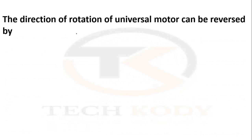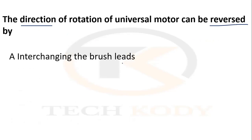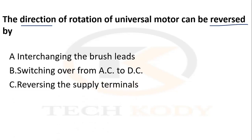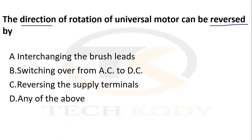The direction of rotation of a universal motor can be reversed by: interchanging the brush leads, switching over from AC to DC, reversing the supply terminals, or any one of the above. By interchanging the brush leads, you can reverse the direction of rotation of the universal motor.